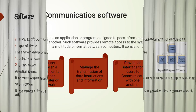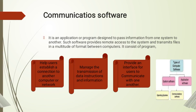System software is further divided into two main types: operating system and communication software. Communication software is defined as an application program designed to pass information from one system to another. It provides remote access to the system and transmits files in a multitude of formats between computers.